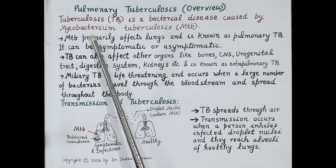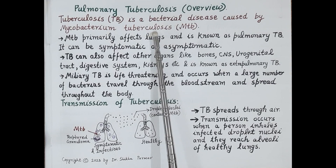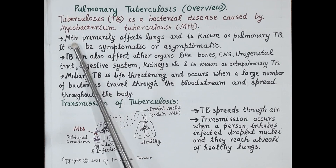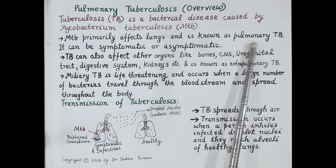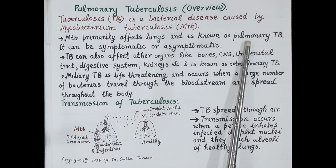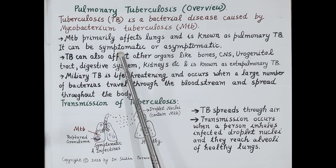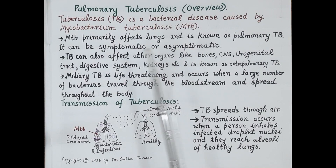This bacteria is also known as tubercle bacilli. TB is a very widespread disease. Mycobacterium tuberculosis is a respiratory pathogen and this pathogen primarily affects the lungs, and the disease is known as pulmonary TB. Pulmonary refers to lungs. A very special feature of this disease is that an individual affected with tuberculosis can be symptomatic or asymptomatic.